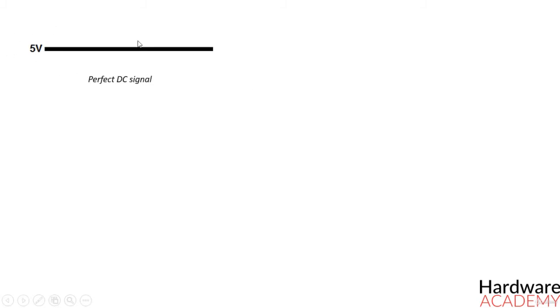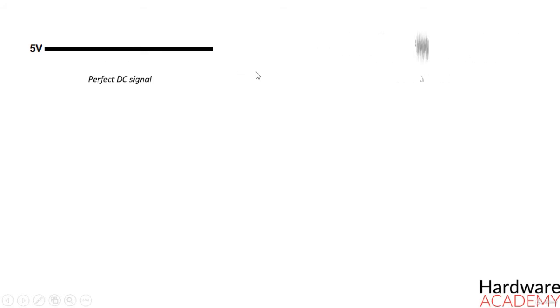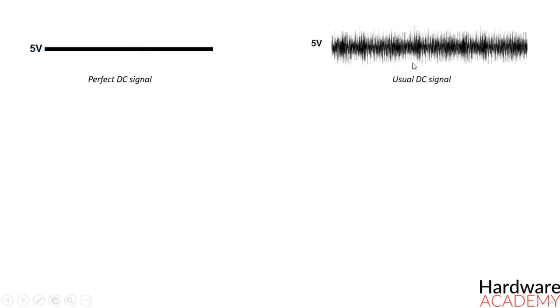Decoupling capacitors are useful in many types of circuits where noise needs to be cleaned up in a DC power source. In a perfect world, the power you get from a DC power source, such as a DC power supply, would be a perfect DC signal containing no noise — a perfect DC signal would look something like this. However, in the real world, the DC signal from power supplies often has noise and looks like the signal shown here.